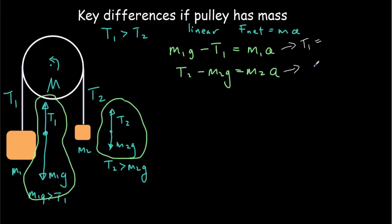And we can rearrange both of these equations for the tension. We'll have a T1 and a T2. So T1 will equal M1g minus M1a, and T2 will be equal to M2g plus M2 times A.